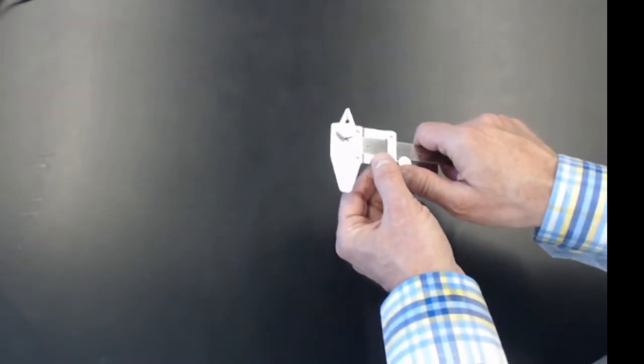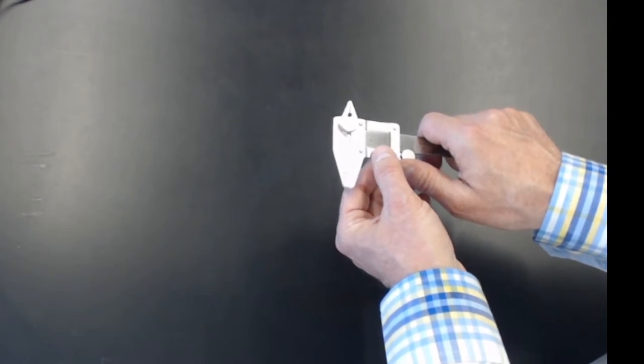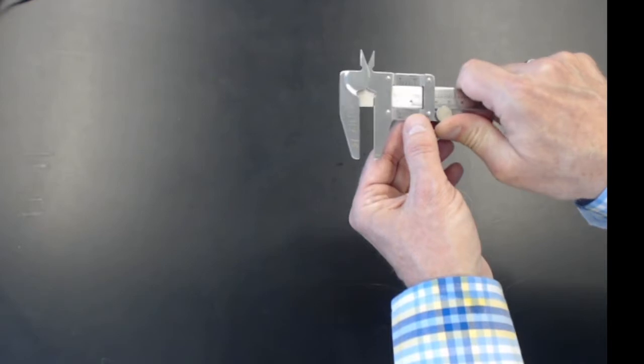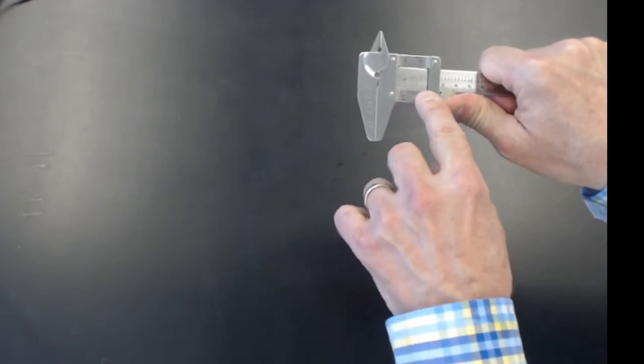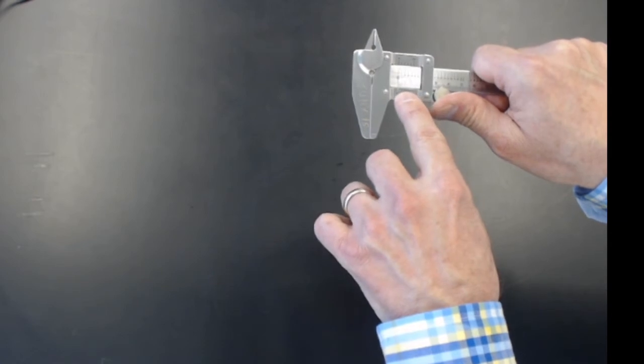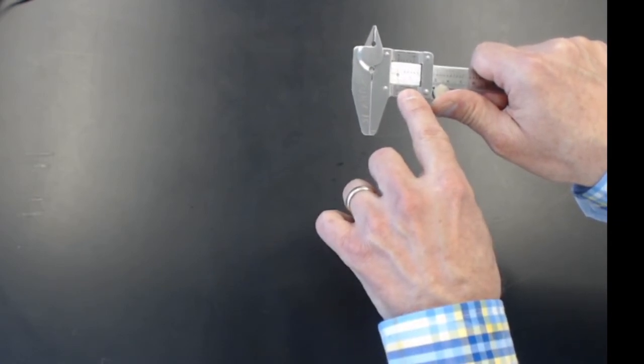To get the diameter of the wires and also the spacing between them, we're going to use this vernier caliper. It's got a vernier scale along the bottom here that you'll need to know how to read. And I'm going to give you photographs of the measurements.